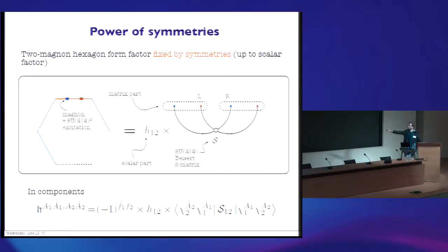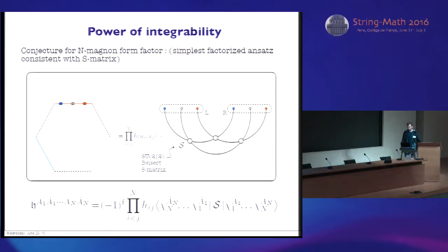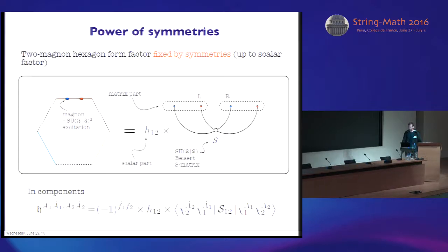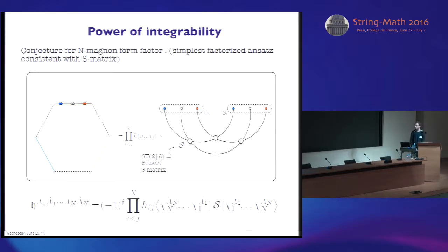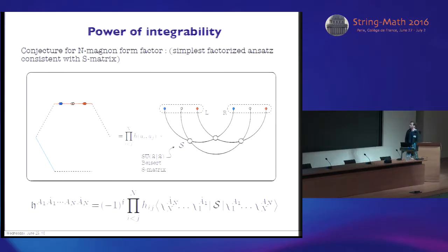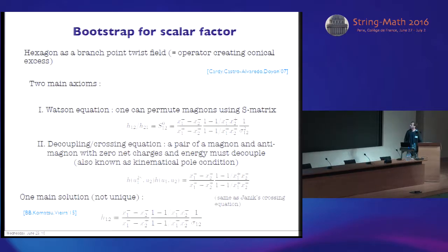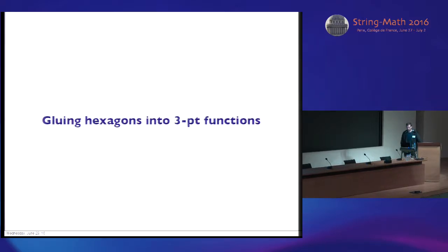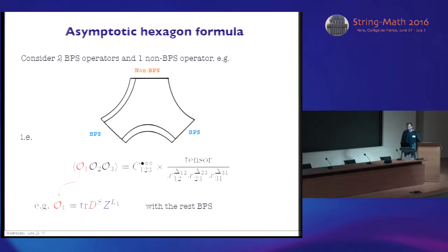The three-point function will preserve a bit less symmetry than two-point functions — that's obvious because we are inserting one more operator. What we find by doing some quick analysis is that the symmetry that remains is actually the diagonal subgroup of the symmetry of our spin chain. So on the three-point function, we cannot rotate left and right independently; we have to rotate them both together. So we are left with one PSU(2|2). But this symmetry is enough to fix a big chunk of the result. In particular, if we just have two magnons, the asymmetries show up and happen to be the only possible way of contracting the left and the right parts together. So this object is uniquely fixed by symmetry up to a scalar factor, H12, which has to be determined differently.